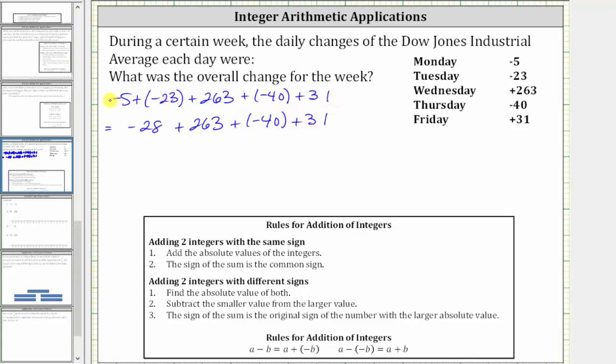If we look at the formal rules for this first sum, notice how we're adding integers with the same sign. The formal rules indicate we add the absolute values of the integers, and the sign of the sum is the common sign. The absolute value of negative five is five. The absolute value of negative 23 is 23. Five plus 23 is equal to 28, but the sum is negative 28 because the common sign is negative.